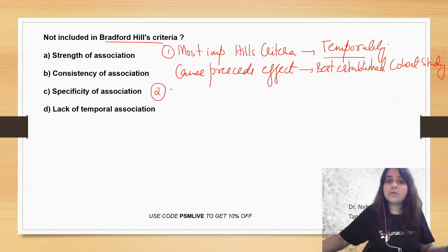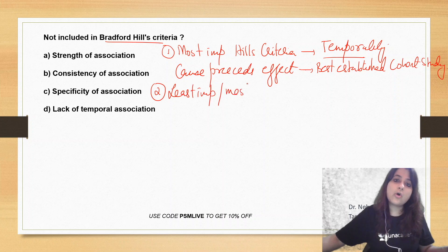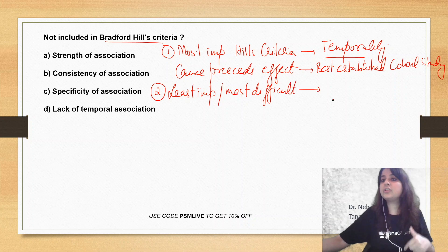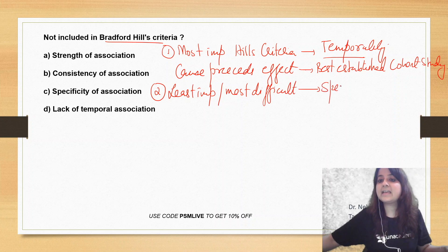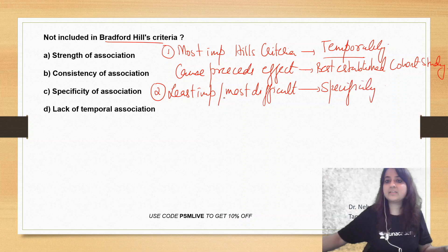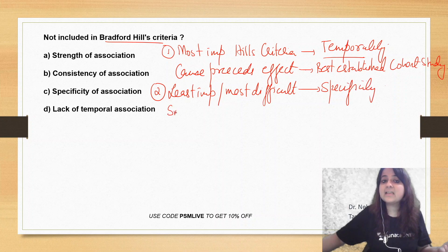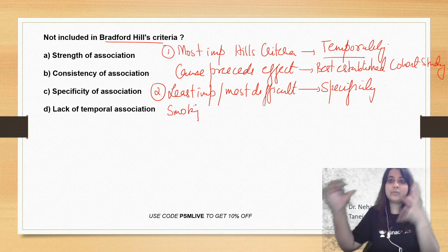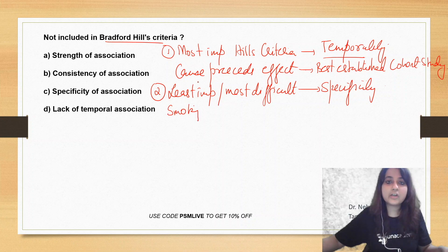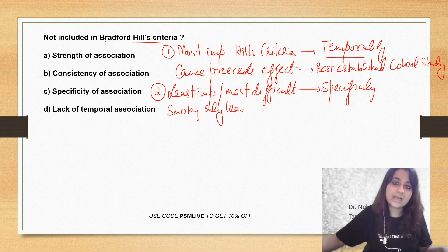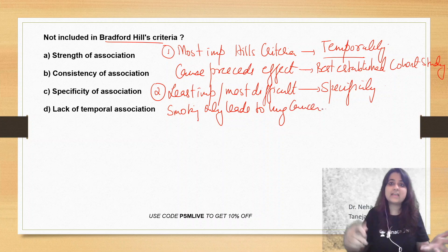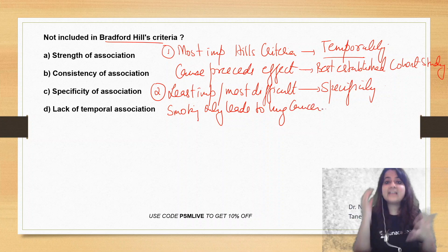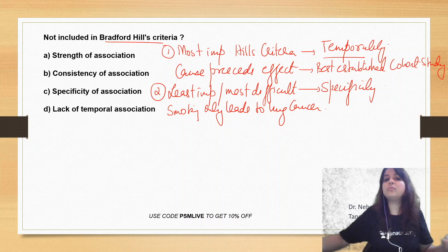Next, ask yourself which is the least important or most difficult Hill's criteria. The least important or most difficult is specificity. Specificity means that an exposure will only lead to one outcome — for example, smoking only leads to lung cancer. But that is not the truth; smoking can lead to other cancers and CVDs. So specificity is the least important and most difficult criterion.